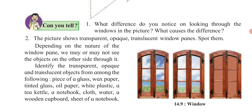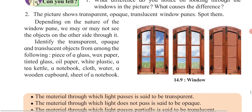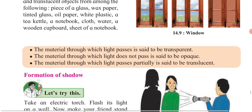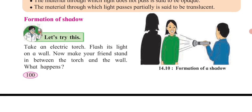Transparent means you can clearly see an image through a particular object. Translucent means you will not see the full object but will see it partially. Opaque means you will see nothing through it — for example, if you are in a room you cannot see what is outside through a wall, only through a window. Materials through which light passes fully are transparent, those through which light does not pass are opaque, and those through which light passes partially are translucent.